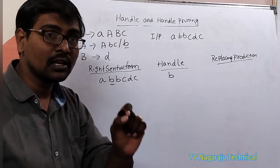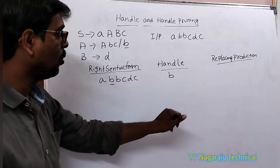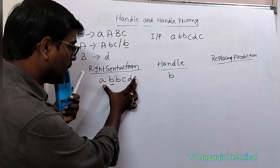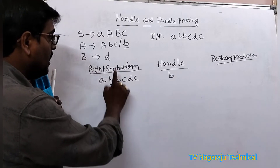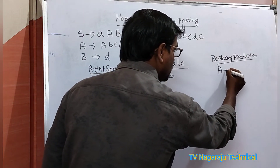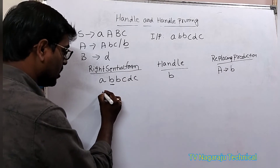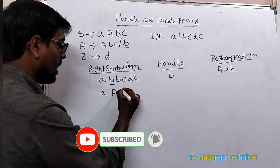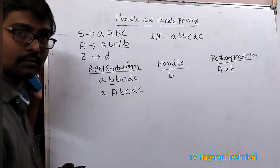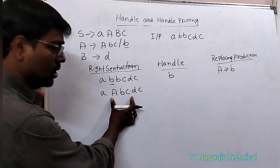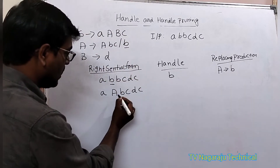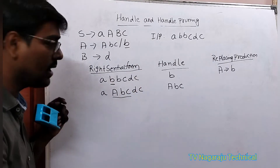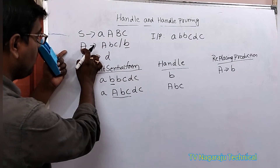So a handle is a substring that matches the right-hand side of a production. In the process of bottom-up parsing, we are deriving from the input string to the starting symbol. Now 'b' is replaced using the production A tends to b. So 'b' is replaced with 'A'. The sentinel form becomes A b c d c. Again, check for any substring that matches a right-hand side production — yes, this substring is present, and it is called the handle.